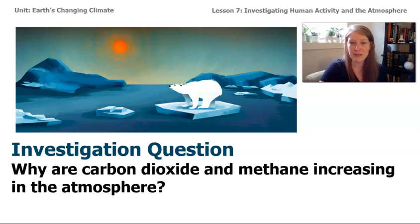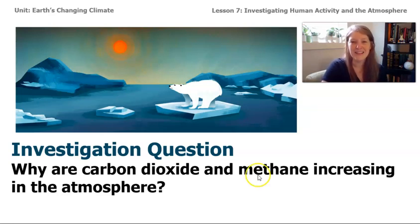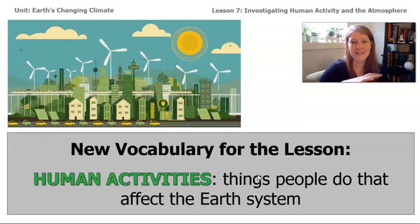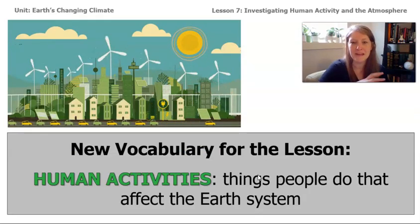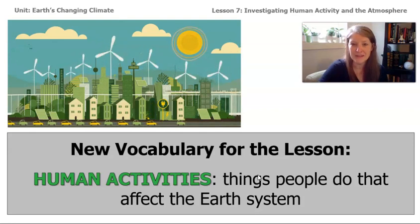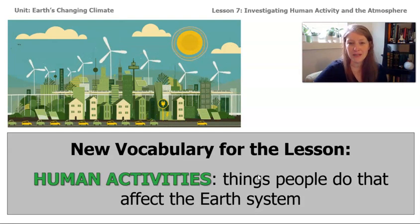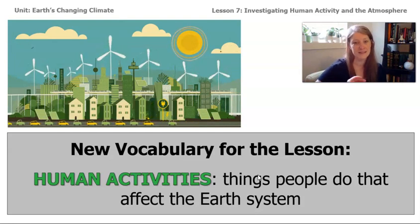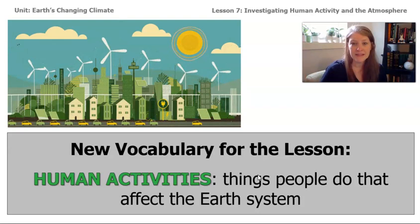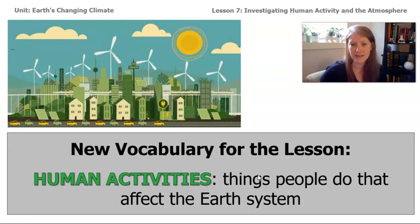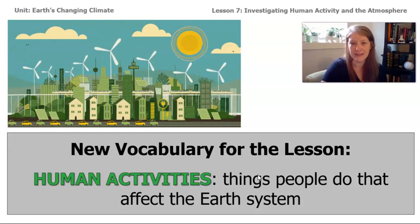We're going to be looking today specifically at something called human activities. The definition we're using for this lesson is: human activities are things that people do that affect the Earth's system. We're going to be investigating ways to stop the increase of carbon dioxide and methane in lessons 8, 9, and 10, but in this one specifically, we're looking at what these activities are and why they increase carbon dioxide and methane.